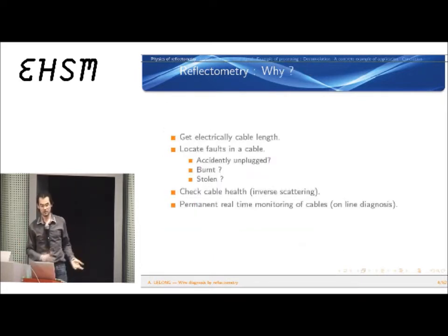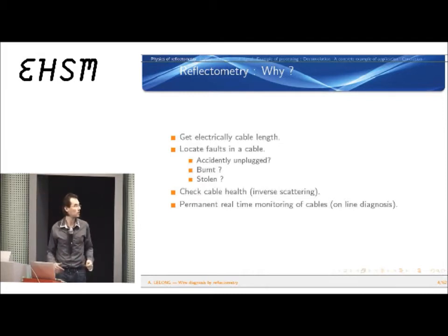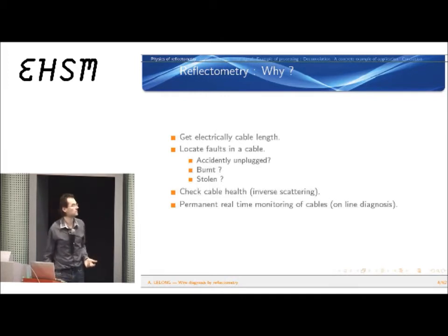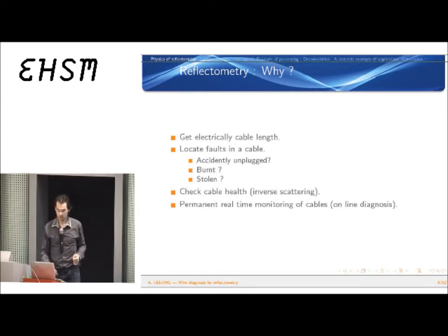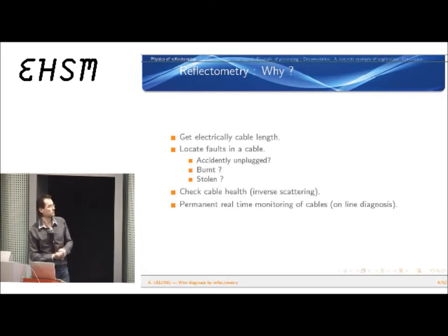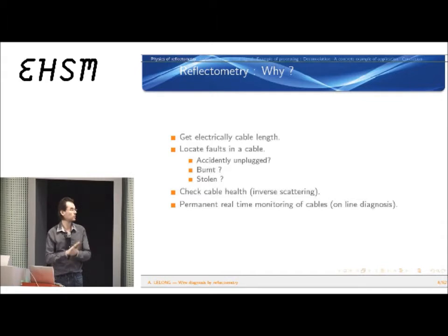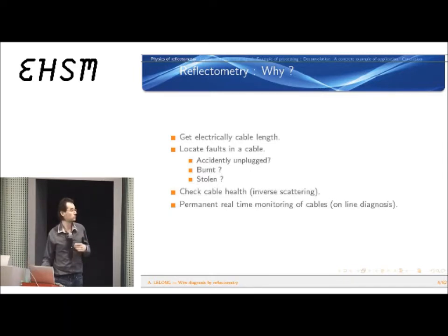Why reflectometry? It can be used simply for measuring cable lengths — there are basic applications in network cards found on PCs. But it can also be used for security: to detect accidentally unplugged cables, burned cables, or physically stolen cables — cuts. It can also be used to check cable health, for example by inverse scattering or other analysis techniques based on the modeling of wires. An application I worked on extensively is permanent real-time monitoring of cables — online diagnosis — generally embedded in vehicles or other systems to permanently check cables for faults.